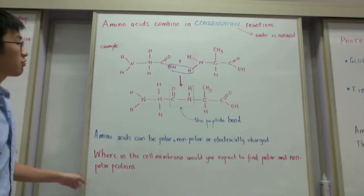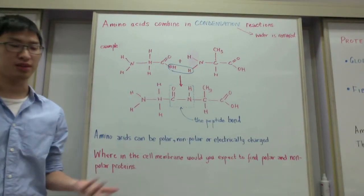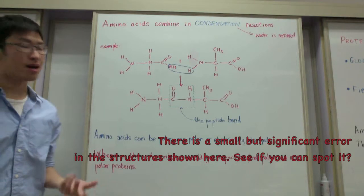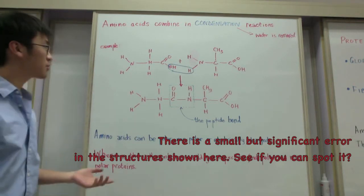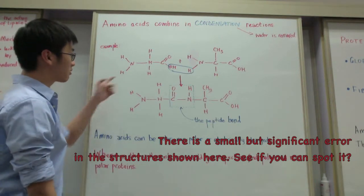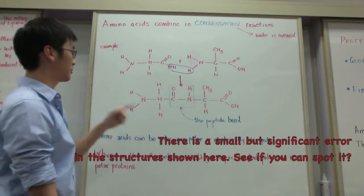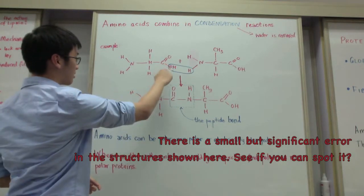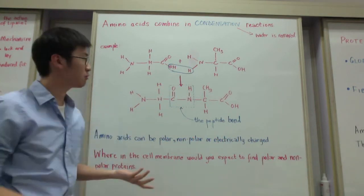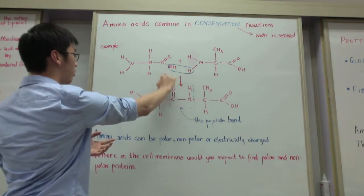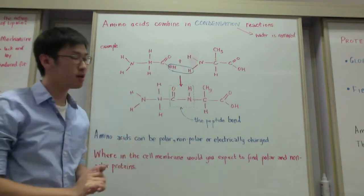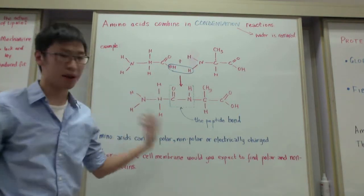Proteins are actually formed through the linkage of multiple amino acids, usually in the hundreds or thousands. The way amino acids combine is through condensation reactions, which means water is produced as a byproduct. For example, glycine plus another amino acid — there's a hydroxyl group (OH) and an H. When you combine these two together you get water, and the bonds on the carbon and nitrogen are able to connect to each other.